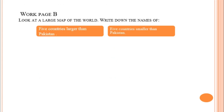Now let's move on to Work Page B. Work Page B is: look at a large map of the world, write down the names of five countries larger than Pakistan and five countries smaller than Pakistan. For this question you can take help from an Atlas — on the first page of the Atlas the world map is given, and you can find the names of countries larger and smaller than Pakistan.